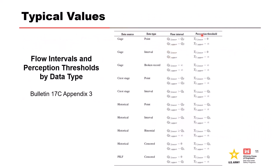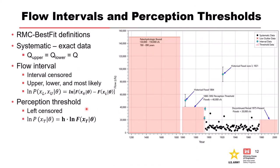From Bulletin 17C Appendix 3 there is a good list of typical values for gauging stations, crest stage gauges, historical floods, and potentially influential low floods. Looking at the same Pueblo dataset in RMC Best Fit: just like in Bulletin 17C, systematic data is exact data, meaning the upper and lower bounds for the flow are equal — simply the exact flow measurement.